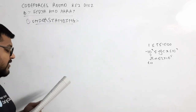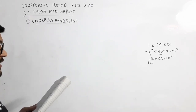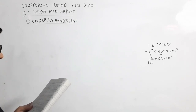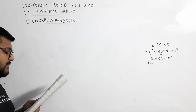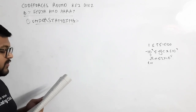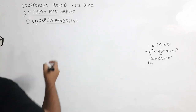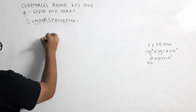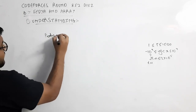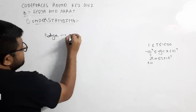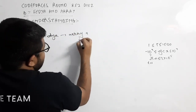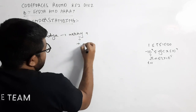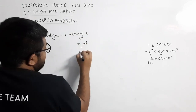For his birthday, Fethiya was given an array A of N integers arranged in a circle. For each pair of neighboring numbers, the absolute difference between them is 1. So Fethiya has got an array A of N integers, and this is arranged in a circle.